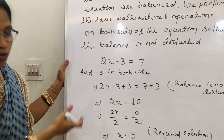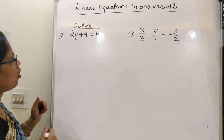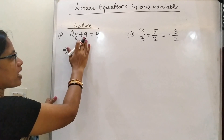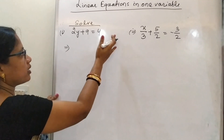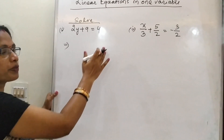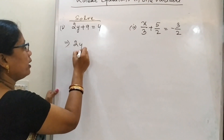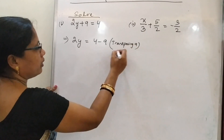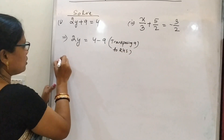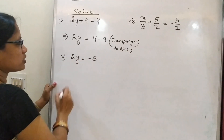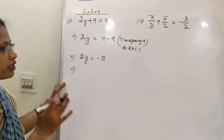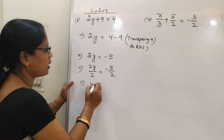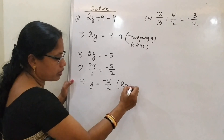Let us solve more examples. Solve: 2y plus 9 equals 4. First, transpose 9 from the left-hand side to the right-hand side — since it is added on the LHS, subtract it on the RHS. So 2y equals 4 minus 9, which gives 2y equals minus 5. Then divide both sides by 2, so y equals minus 5 by 2. This is the required solution.